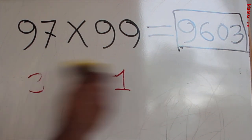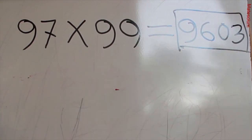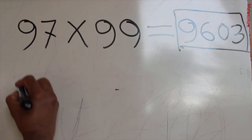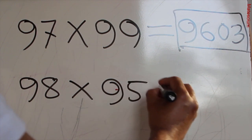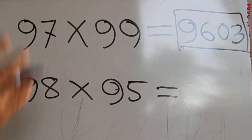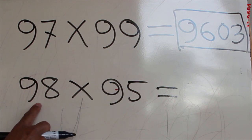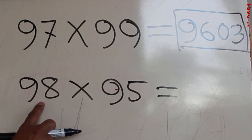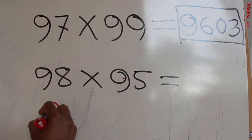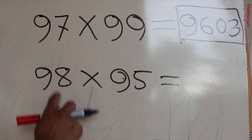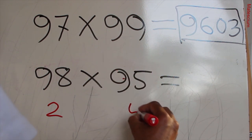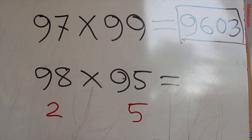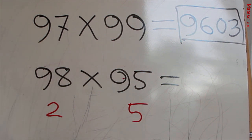Let's do another example: 98 times 95. As I told you, think of the nearest bigger number, which is 100. We need 2 with 98 to make 100, and we need 5 with 95 to make 100. Next, add those two numbers: 5 plus 2 is 7.